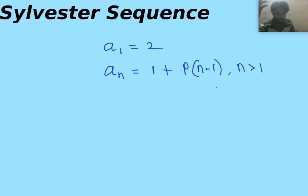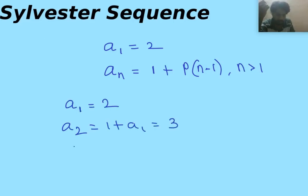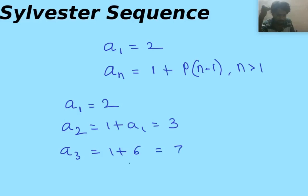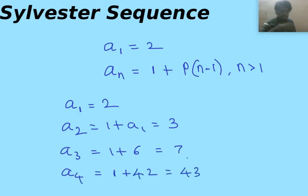To understand this recurrence, let us find the first few elements of the sequence. a1 equals 2, a2 equals 1 plus a1 which is 3, a3 equals 1 plus the product of the first 2 elements which is 2 times 3, so a3 equals 7. a4 equals 1 plus the product of the first 3 elements 2 times 3 times 7 which is 42, so a4 equals 43, and so on.